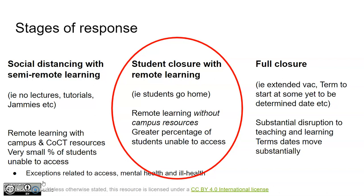We're preparing for three stages of response: social distancing, face-to-face teaching with shutdown, and a full campus closure — I'm hoping we never get to the third. The social distancing phase would have required, as extreme as possible, a reduction in face-to-face time, but with students continuing to be able to access campus. The shutdown with remote learning phase, which is where we are now, would see a closure of campus to students, with staff strongly being encouraged to work from home.